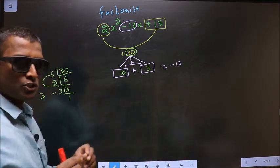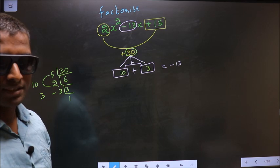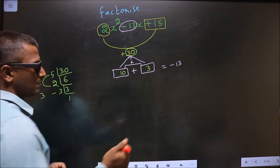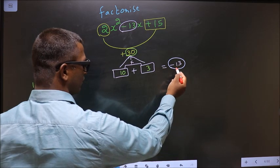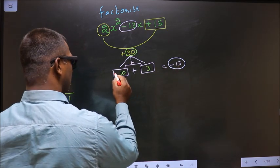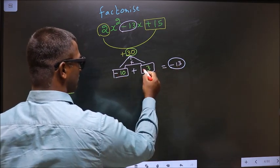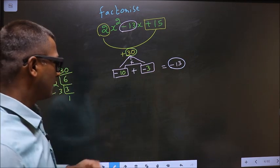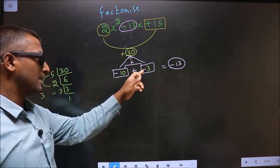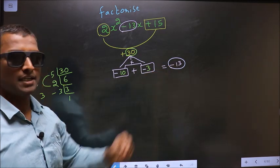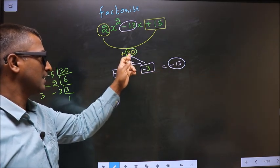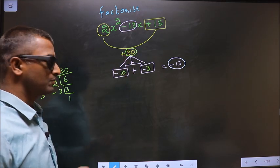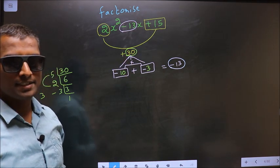Now you should adjust the signs. You need to get -13. To get -13, put minus before 10 and minus before 3. Now -10 - 3 = -13, and -10 × -3 = +30. So the signs are adjusted.